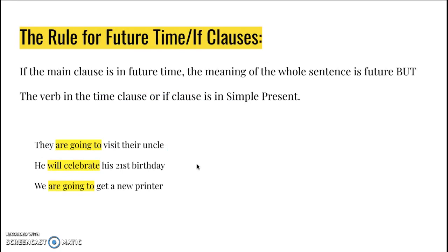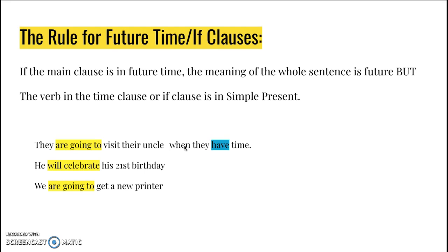So what's our rule for time and if clauses in the future? If the main clause is in future tense, the meaning of the whole sentence is future — everything in that sentence is talking about the future. But the actual verb tense in the time clause or the if clause is in simple present. 'They are going to visit their uncle' — 'going to visit' is our future tense. Now we add a time clause: 'when they have time.' That's future in meaning, but the actual verb tense is simple present.